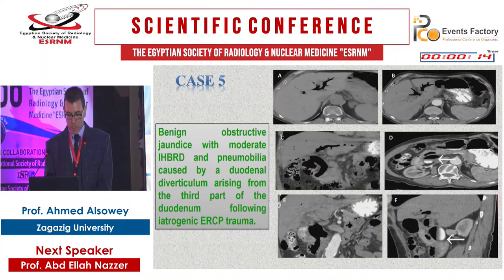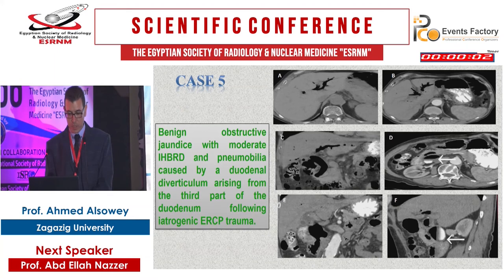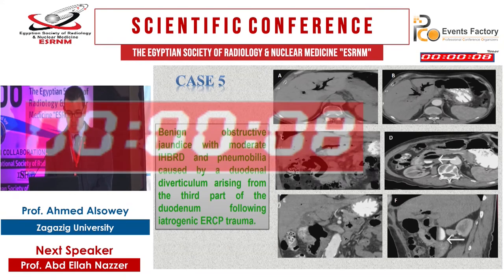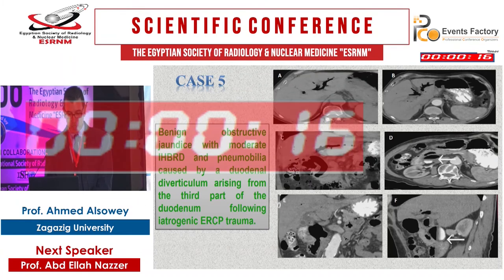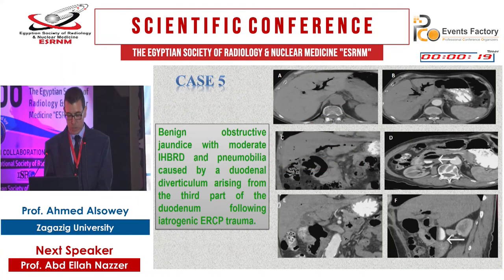This case underwent ERCP two months ago and there is significant pneumobilia involving the left and right lobes. The pneumobilia is seen extending into the dilated common bile duct down to its distal end, and there is a fluid-containing cystic lesion medial to the common bile duct with an air-fluid level. This cystic lesion is seen directly related to the third part of the duodenum, consistent with a duodenal diverticulum. This represents a benign obstructive jaundice with moderate intrahepatic biliary dilatation and pneumobilia caused by a duodenal diverticulum following iatrogenic ERCP trauma.